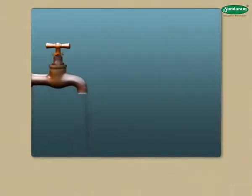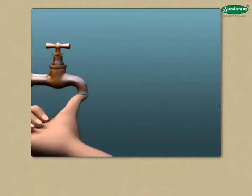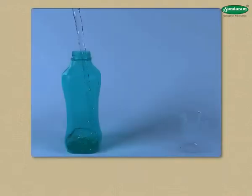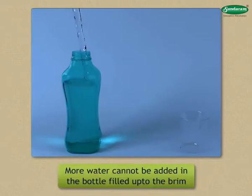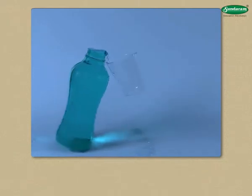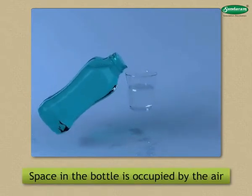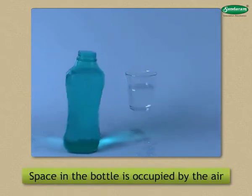Open a water tap and try to break the stream of water with your fingers. Fill a bottle with water fully up to the brim and try to add more water — it is not possible. Now remove some water into a glass. What is in the space which was earlier occupied by water? It is air.